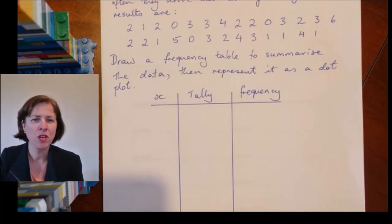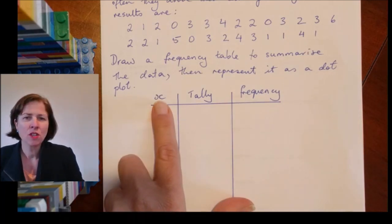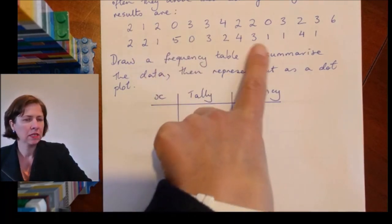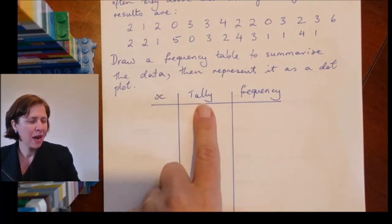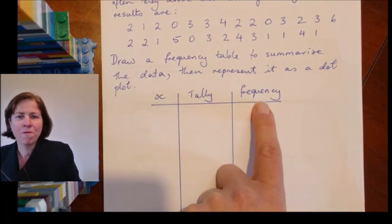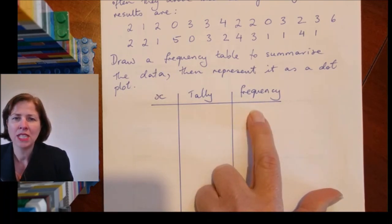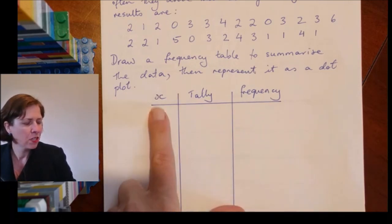I've quickly drawn my frequency table, although I haven't put any numbers in yet. Now x represents these numbers, and then my tally is how many times each number comes up. My frequency is, once I've done my tally, I'm going to count how many times each number came up.